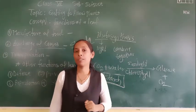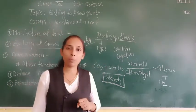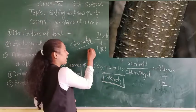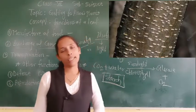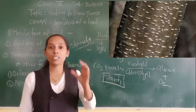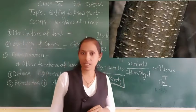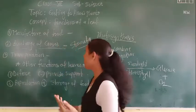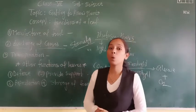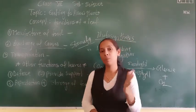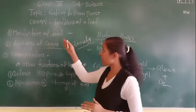The lenticels, which are present on the stem of old plants, help to do the exchange of gases in the plant. So with the help of stomata and with the help of lenticels — which are present only on the stem of old plants — the exchange of gases takes place. Up to now, we have discussed two functions of the leaves: manufacture of food and exchange of gases.